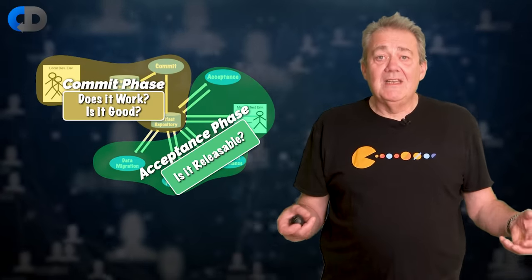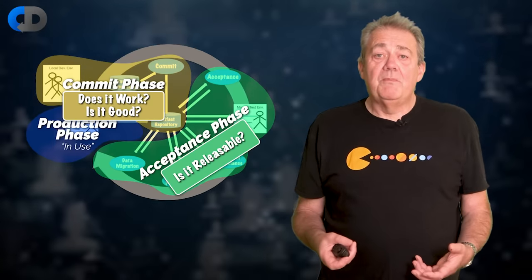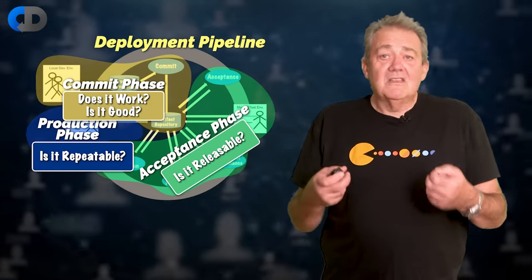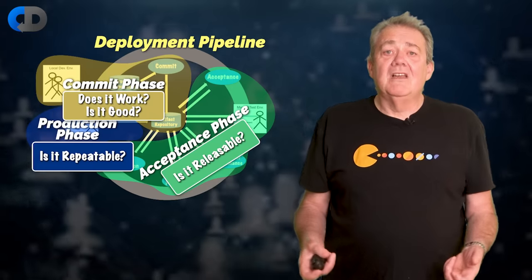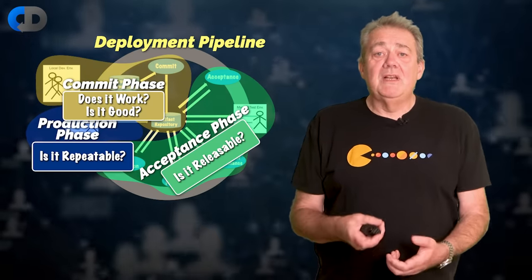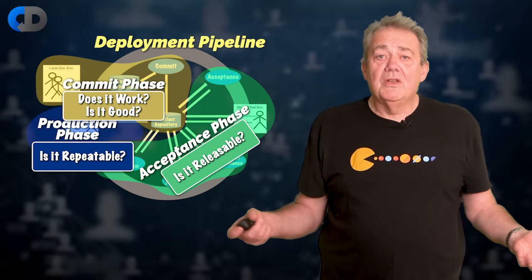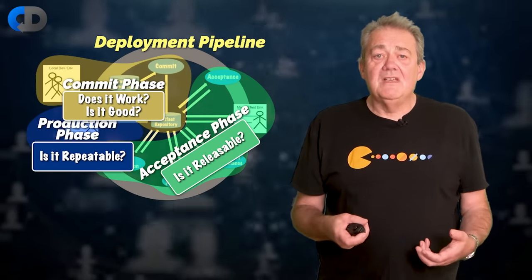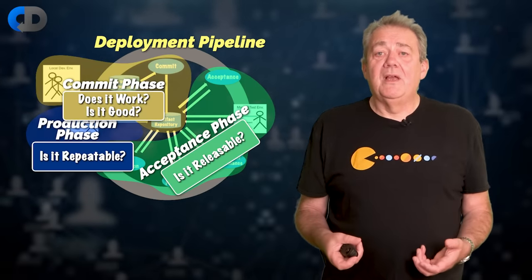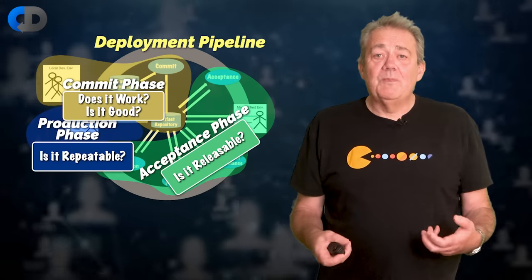If a change has passed all of our testing in the acceptance and commit phases, what's left to do? Well, release it into production. The final step of the pipeline is the production phase. This may be as simple as deploying a Docker image, or it may be sophisticated, using release strategies like canary releasing, blue-green deployment, A-B testing, and monitoring success through observability and site reliability engineering techniques. You can think of the commit and acceptance phases as rehearsing the use of the software, and the production phase as putting the software on stage.